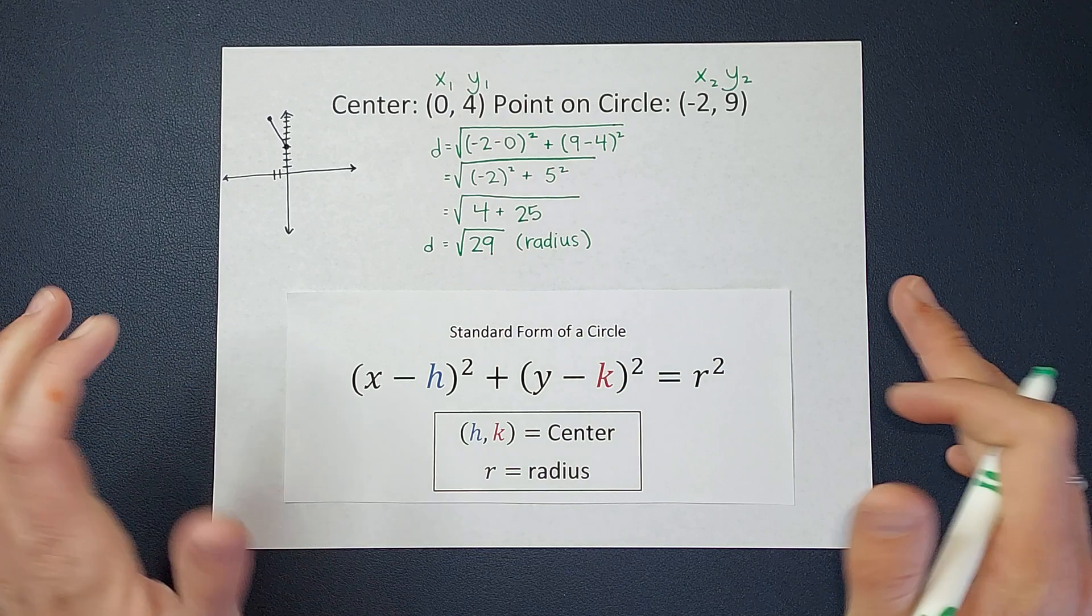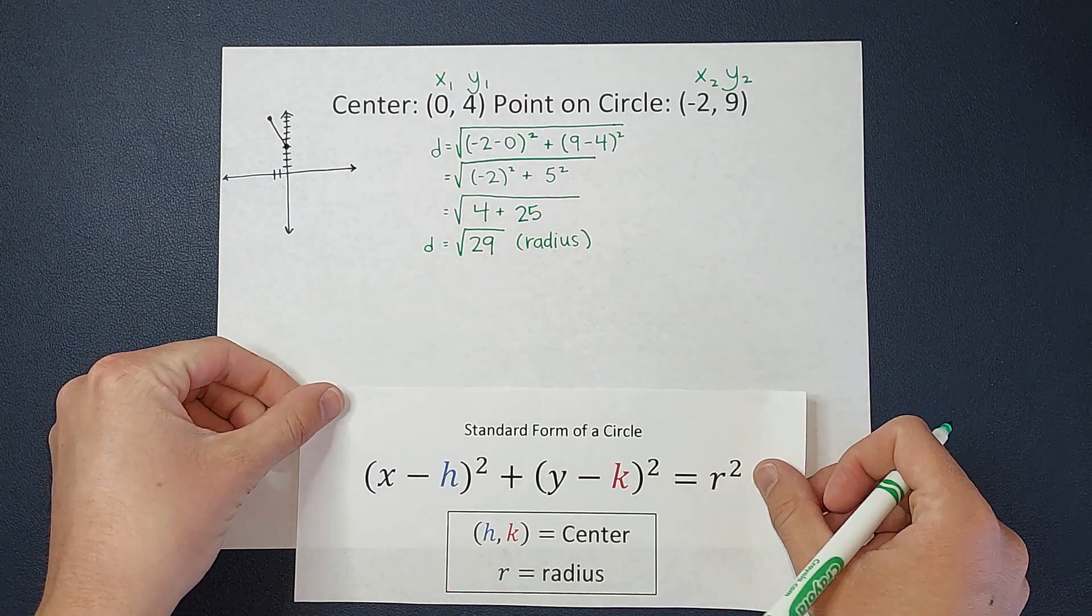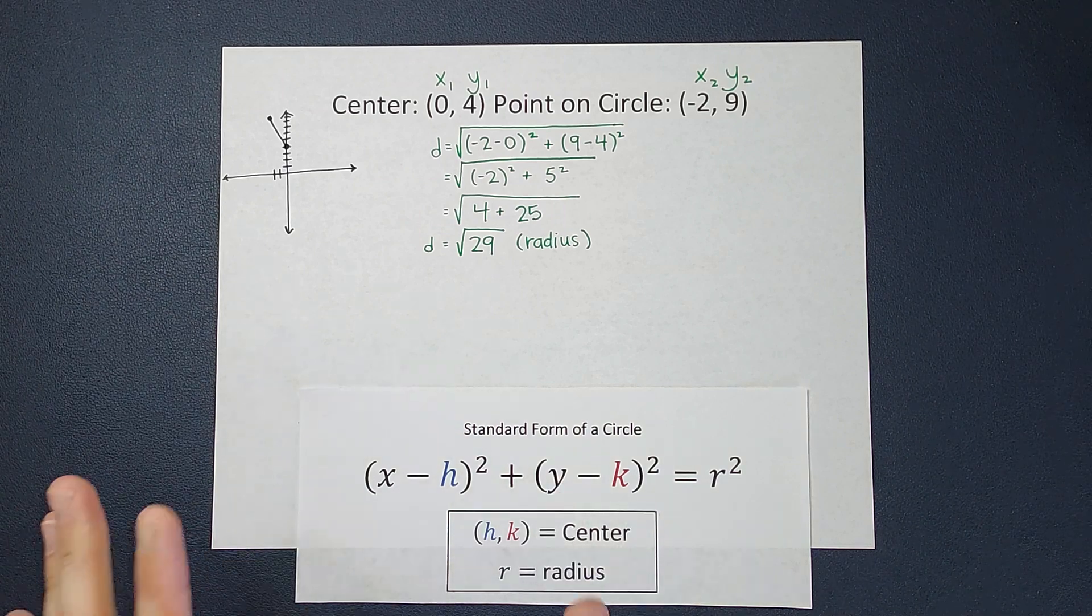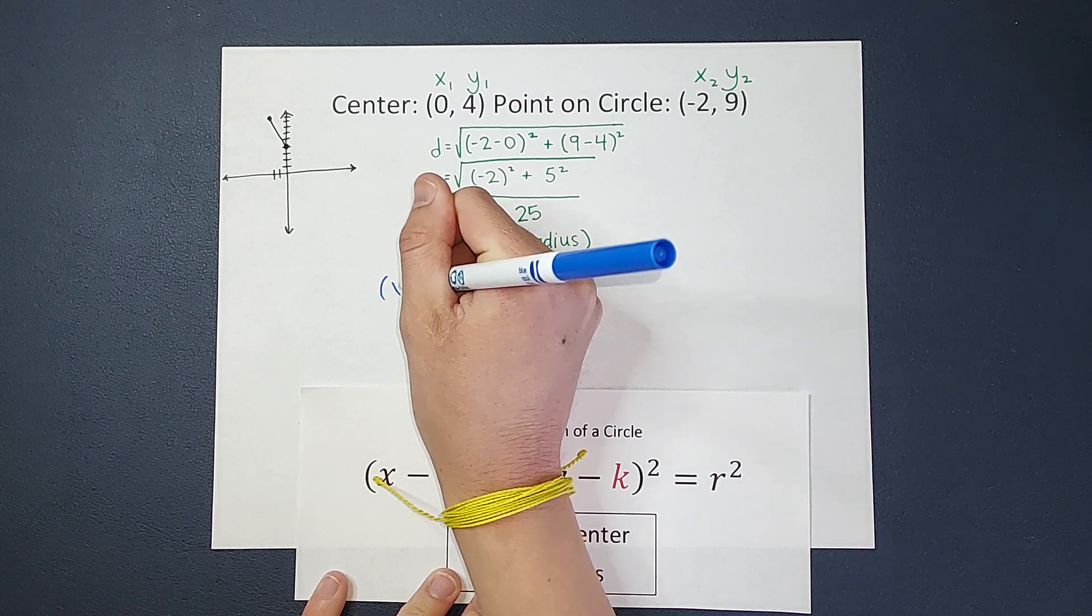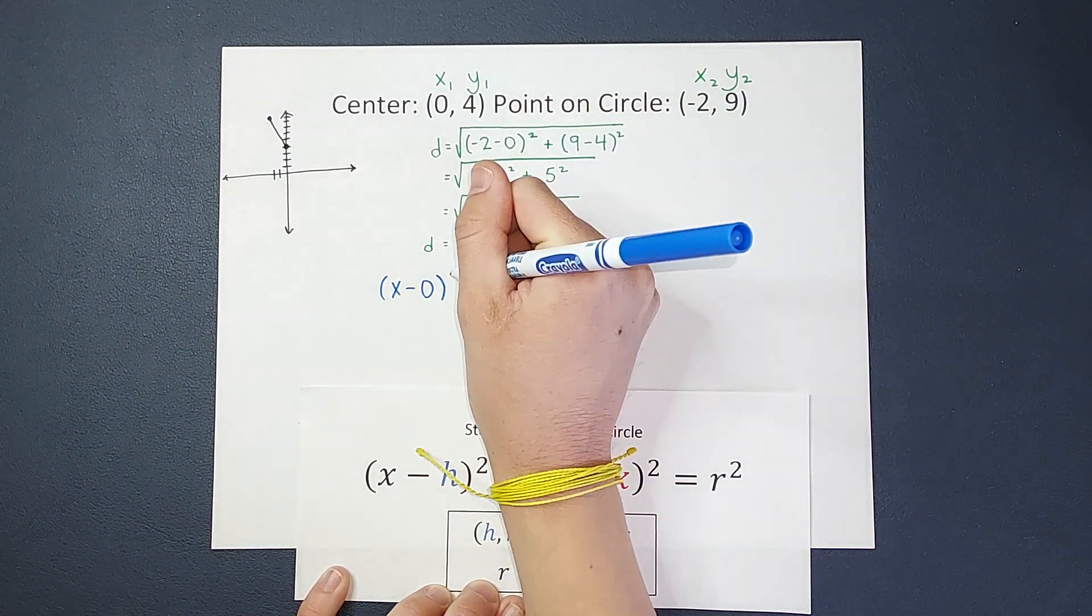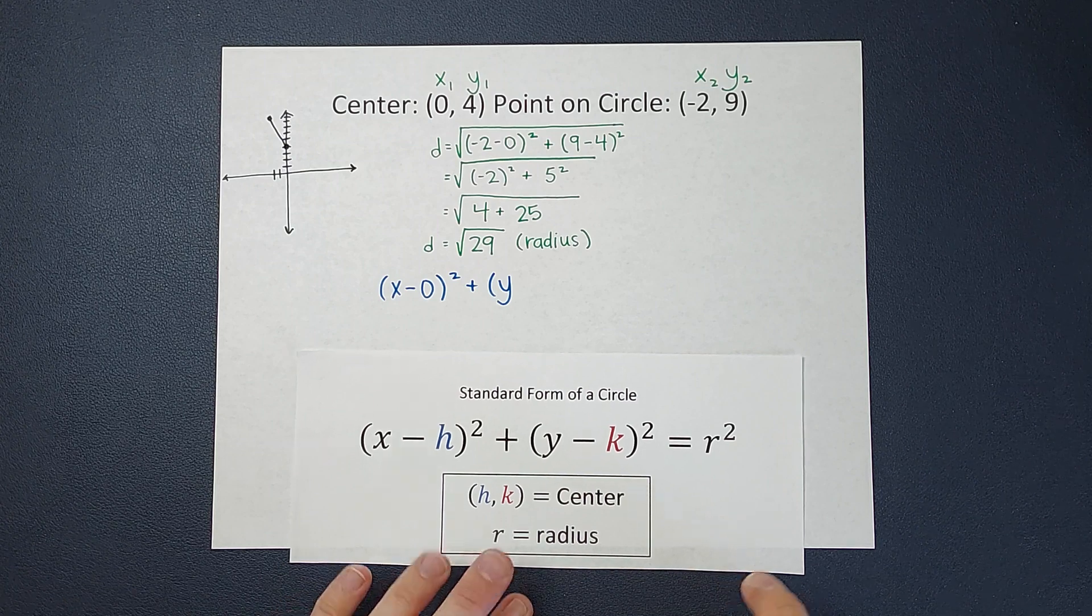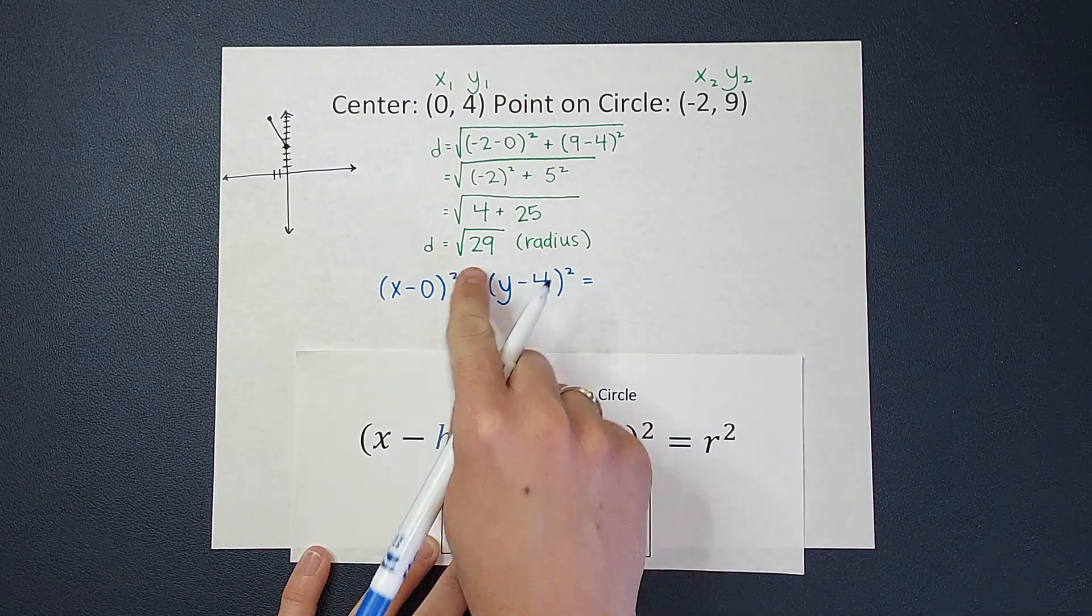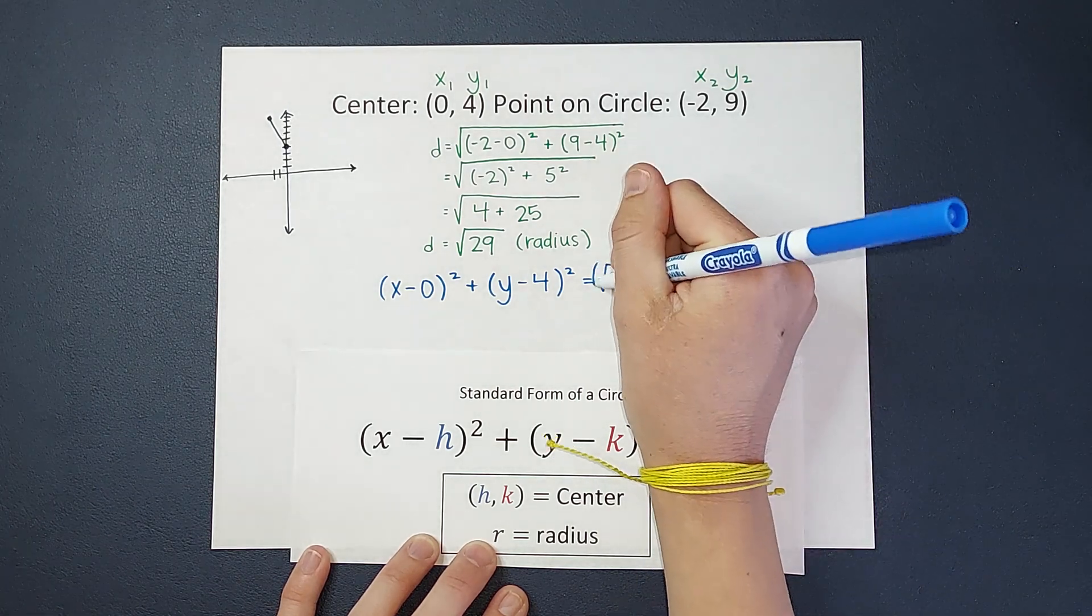So now, in order to fill this out, I need my center, which I have, and my radius, which we found. So now I can go ahead and fill this in. So I'm going to have, remember my x and y are going to stay as x and y, and we are filling in the numbers for h, k, and r. So we are going to have (x - h), which h is the first number in the ordered pair of my center, so happens to be 0, squared plus (y - k), which is the second number in my center, so 4, squared equals the radius, which we figured out using the distance formula, was the square root of 29, and that is squared.